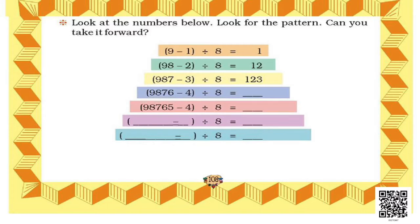Just look at the numbers given in your book and look for the pattern. Can you take it forward? The pattern starts with 9 minus 1 divided by 8 is equal to 1. 98 minus 2 divided by 8 is equal to 12. 987 minus 3 divided by 8 is equal to 123. So, what is the pattern?